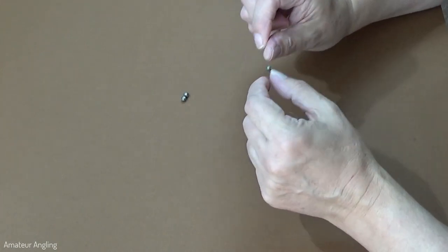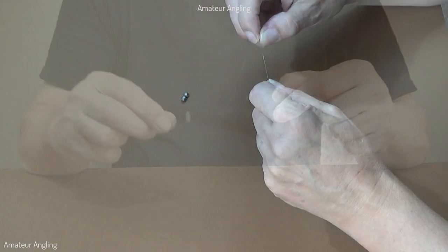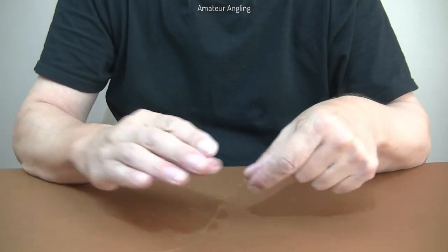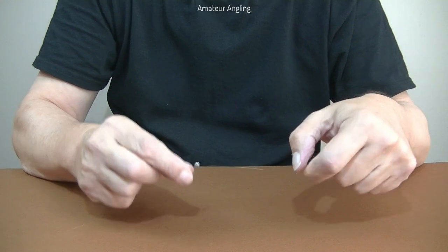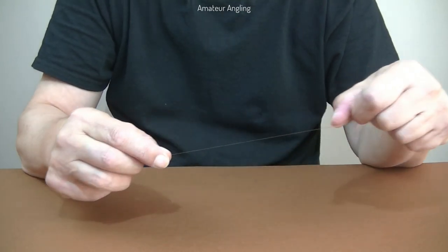My method is to add the shot at the end of the line, then slide them along the line away from the flattened weak spot. But the problem with non-toxic shot is that they don't want to slide.